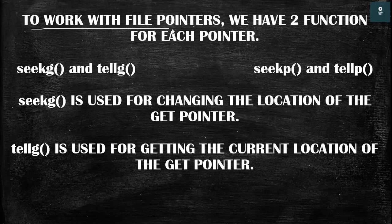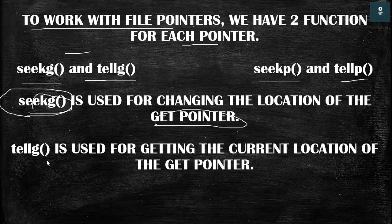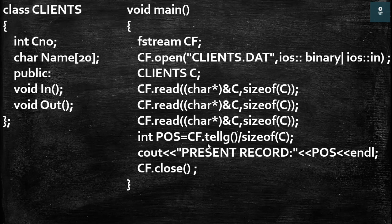To work with a file pointer we have two functions for each pointer. We have the seekg and tellg functions for the get pointer, and for the put pointer we have the seekp and tellp functions. The seekg function is used for changing the location of the get pointer. But in this question we are using the tellg function. The tellg function is used for getting the current location of the get pointer. So in this question we have the get pointer and we are using the tellg function for getting its current location.